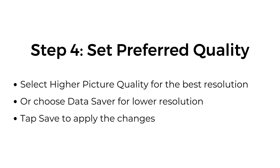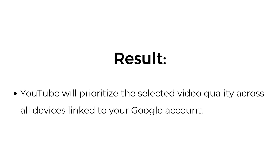Step four — set preferred quality. Set higher picture quality for the best resolution, or choose data saver for lower resolution. Tap save to apply the changes. Result: YouTube will prioritize the selected video quality across all devices linked to your Google account.